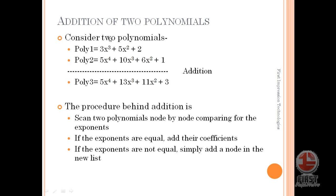To give you an example of addition of two polynomials, we have considered two examples: polynomial 1, which is 3x cubed plus 5x squared plus 2, and polynomial 2, which is 5x to the power of 4 plus 10x cubed plus 6x squared plus 1. How we can perform the addition of these two polynomials? The result will be stored in polynomial 3.